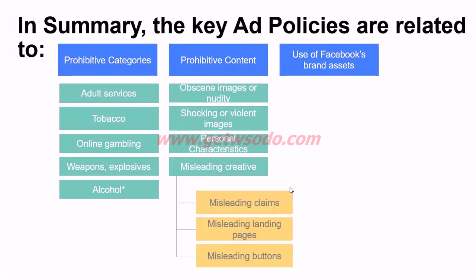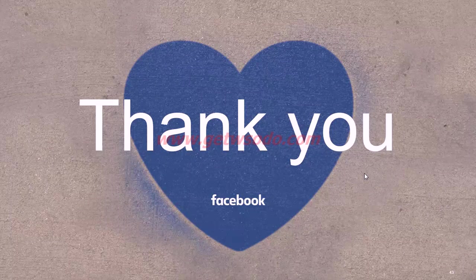To summarize this module: we learned how the ad approval process works and the key ad policies that determine whether your ad gets approved or disapproved. Prohibited categories include adult services, tobacco, online gambling, weapons and explosives, and alcohol — with alcohol requiring adherence to local regulations and permissible age limits. Prohibited content types include obscene images or nudity, shocking and violent images, personal characteristics targeting, and misleading creatives — including misleading claims, landing pages, and buttons. Incorrect usage of Facebook brand assets can also lead to disapproval. Thank you and see you in the next session.